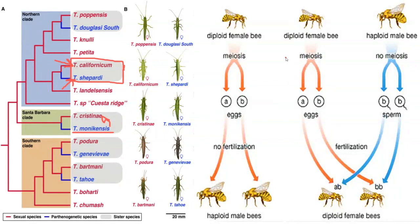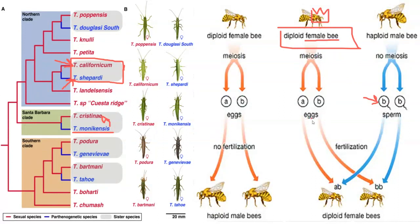Bees also undergo parthenogenesis, but not due to lack of mate availability — they do this as part of their social structure. The female diploid bee, the queen, is the only bee that reproduces sexually with male drone bees, which produce sperm. Sexually produced offspring are other diploid females. But the queen also reproduces on her own without the males, producing haploid worker bees and drones. The worker bees are haploid and sterile, while drones can sexually reproduce only with the queen.